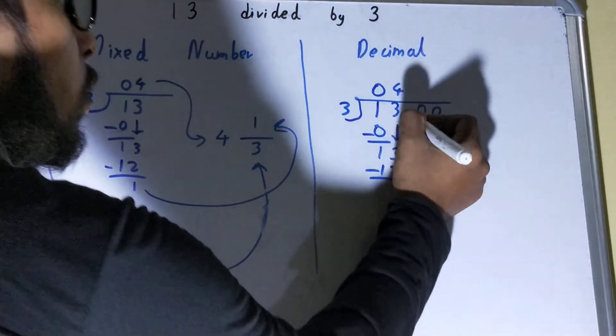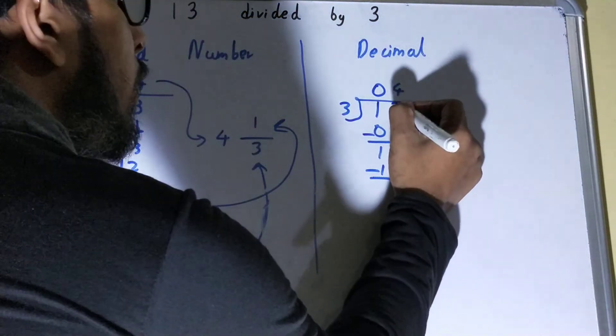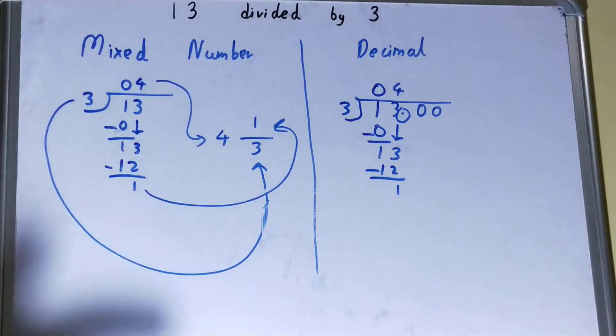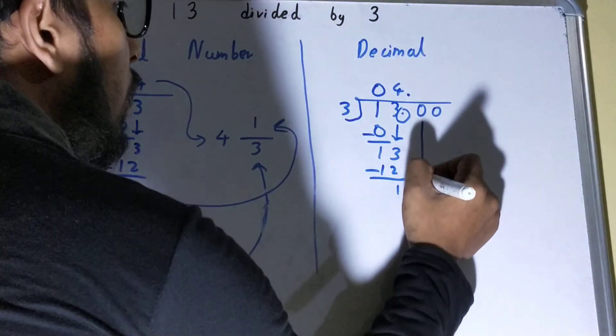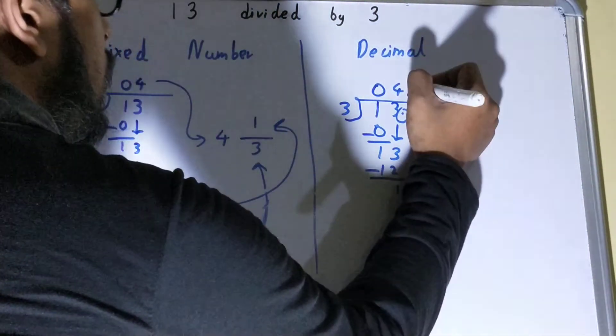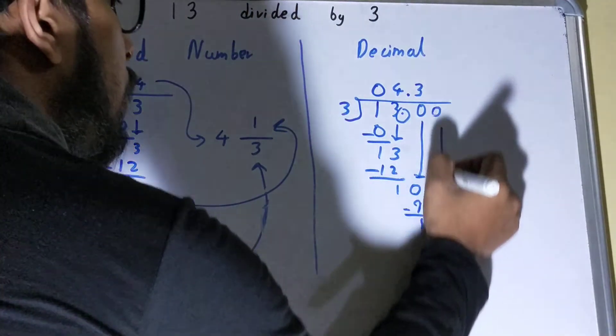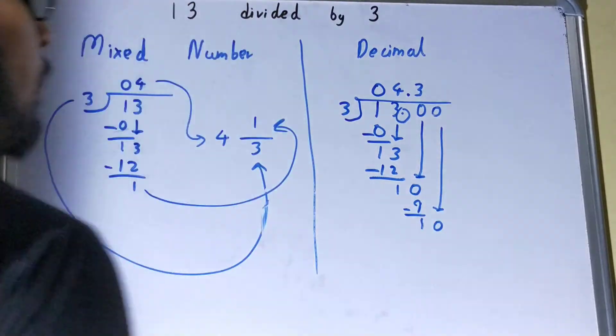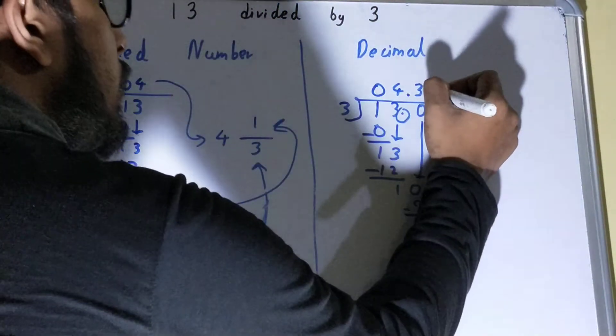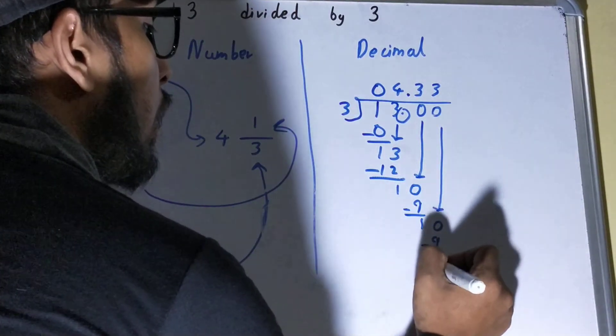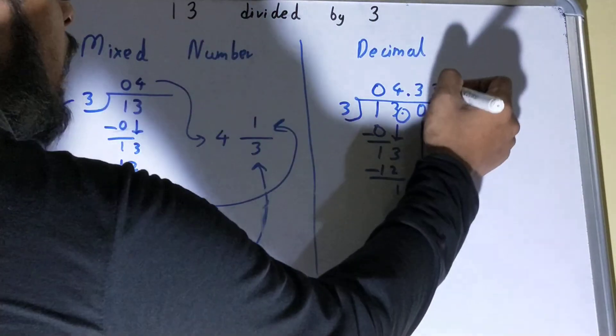Now if I want to go further, I have to pass this decimal, so I need to put the decimal in the quotient as well. Then I can bring this zero down. Three threes is nine, I'll be left with one. One more zero comes down. Again, three threes is nine, and that's done.